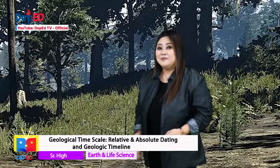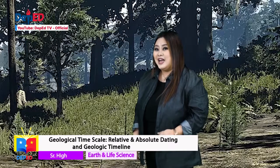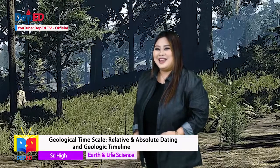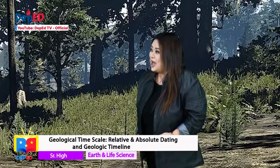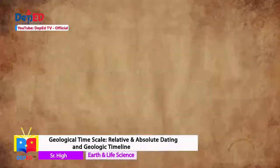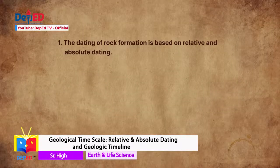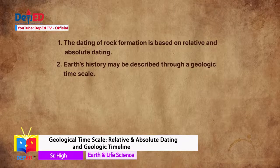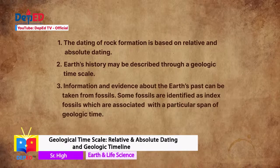Good job, adventurers! Another episode of Earth and Life Science was unlocked today. But wait! Here is a recap! Number 1: The dating of rock formation is based on relative and absolute dating. Number 2: Earth's history may be described through a geologic time scale. Number 3: Information and evidence about the Earth's past can be taken from fossils. Some fossils are identified as index fossils which are associated with a particular span of geologic time.